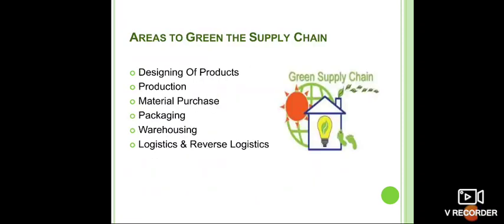The main areas where we can apply green supply chain management in the supply chain are: designing of the product, production, material purchasing and procurement of raw materials, packaging, warehousing, and logistics. These are the primary areas where green supply chain management can be applied.